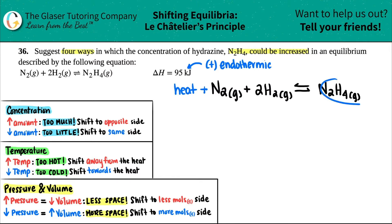If we had the heat on the product side, that would be an exothermic reaction, and the number here would be a negative value. Now let's get down to business. We now need to suggest four ways in which the N2O4 could be increased. So the goal is to increase this guy. We need to increase N2H4.